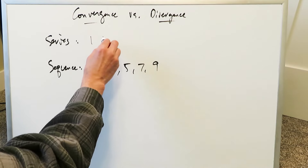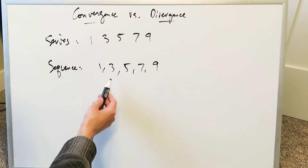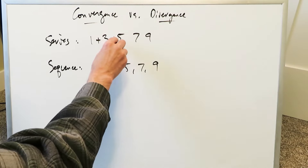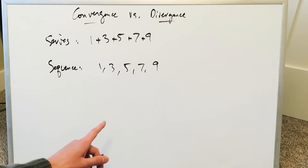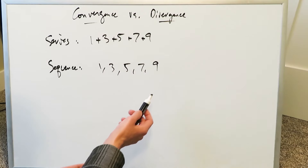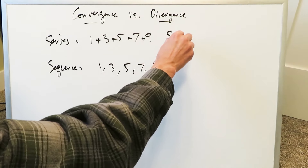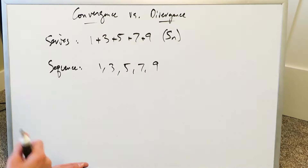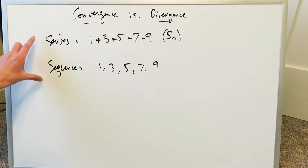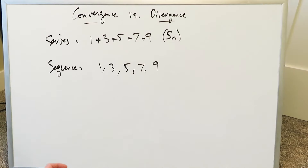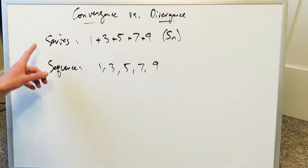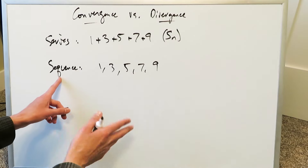Now look at the same numbers. The difference between a sequence and a series is this: a series will be the sum of those terms of a sequence. You see how you have a comma in a sequence, but when you're talking about a series, you start doing their sums. That defines the difference. Series is a sequence, but in terms of their sum.